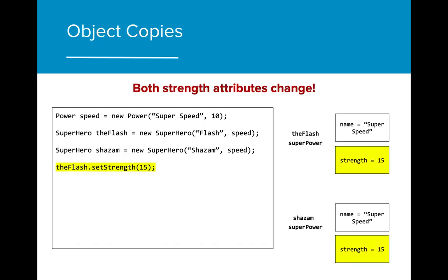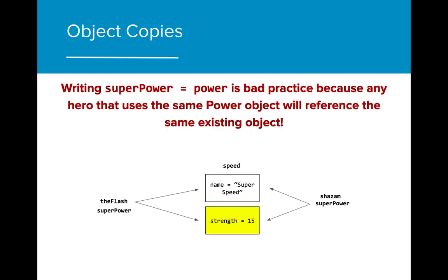Now both the superpower power objects in the flash and shazam have the same attributes. However, if we want to change the value of strength for the flash, something interesting happens. The value of strength for shazam also changes. Why is that? This is because both the flash's superpower and shazam's superpower reference the same speed object.